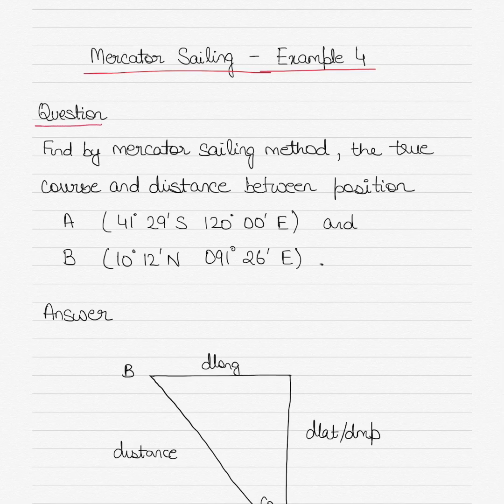As you know, Mercator Sailing is used for distances greater than 600 nautical miles. The only assumption is that it assumes that the longitudes are vertical lines equally placed, but it compensates for this assumption by the different distance between the latitudes. The distance between the latitudes is called meridional parts, and the difference between the two distances is called difference in meridional parts, or DMP.